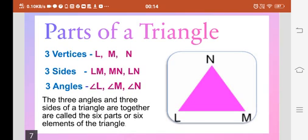If we join three vertices, we get the sides. Suppose we join LM, we get the side LM. If we join the points M and N, we get MN. If we join the points L and N, we get LN.